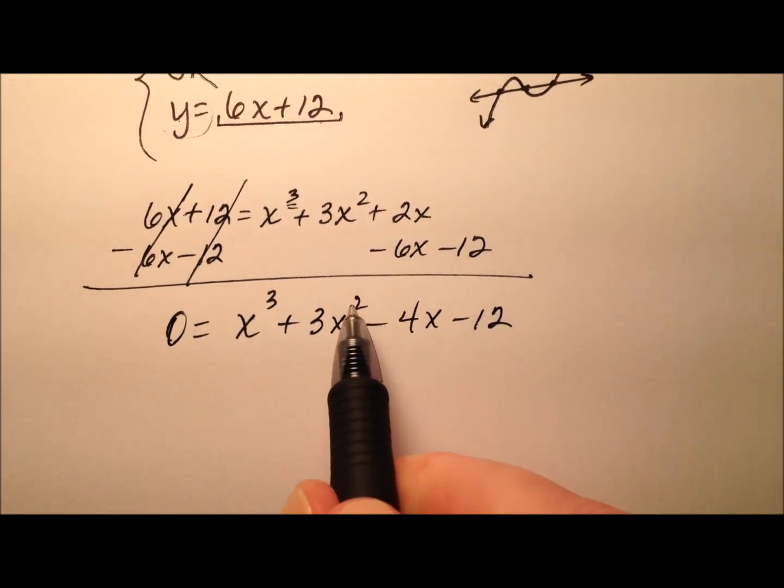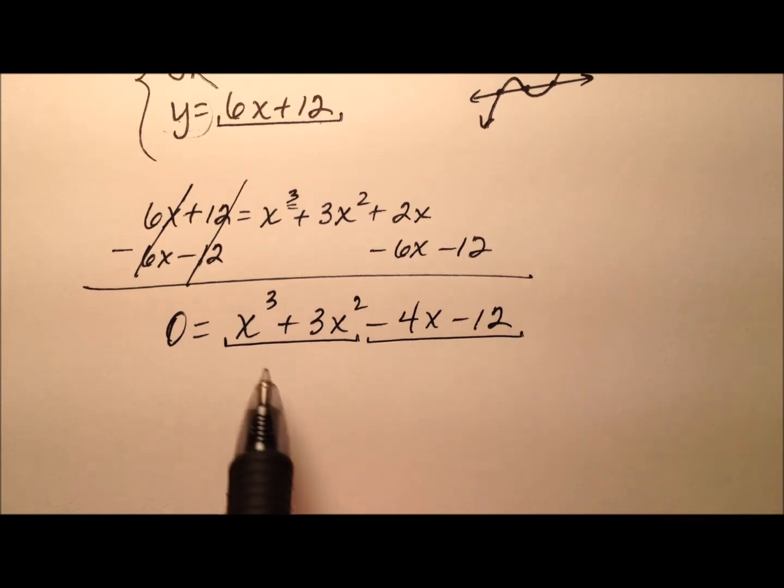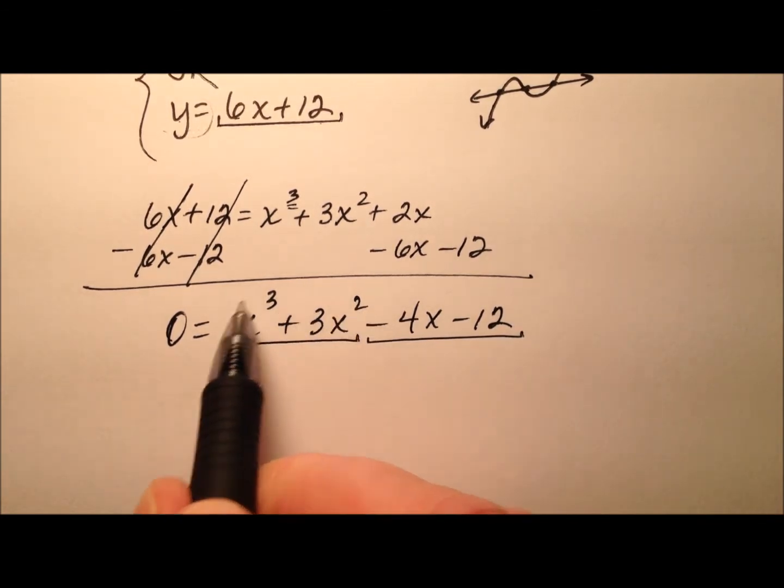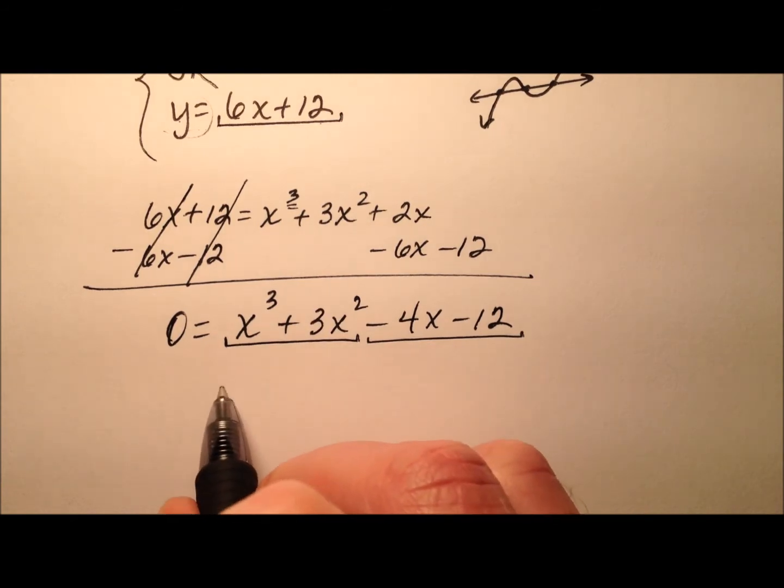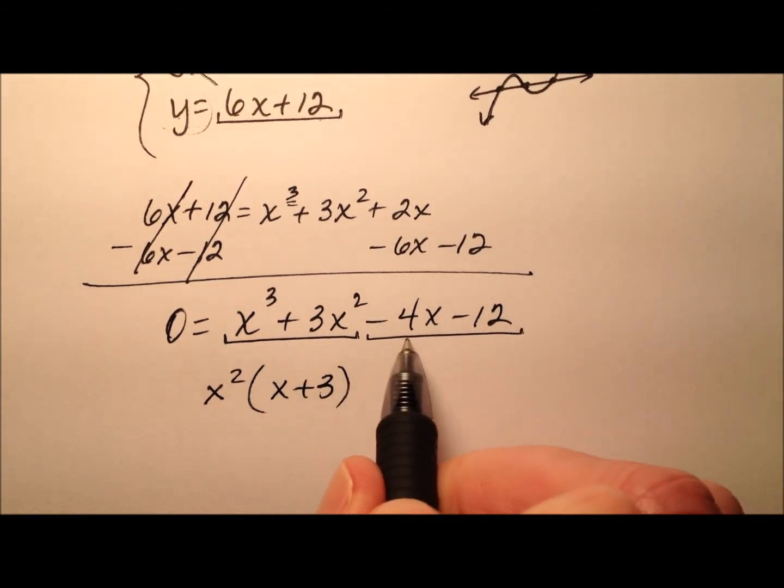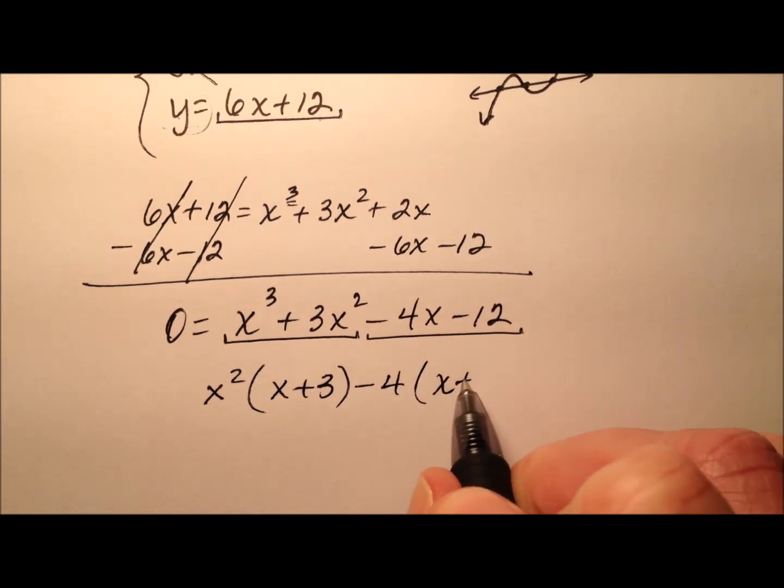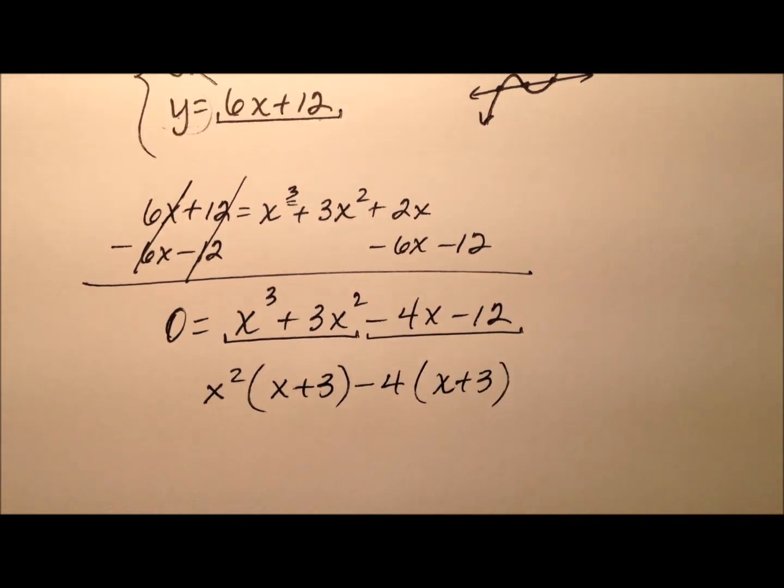The nice thing that it looks like we can do here is do a little factor by grouping. So we're going to divide this into the first pair and the second pair, and let's go ahead and find the greatest common factor here. It looks like x squared. And when I pull that x squared out, I'll have x plus 3. Similarly, I'm going to pull the greatest common factor out, which is negative 4, and my leftovers will be once again x plus 3.